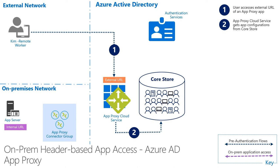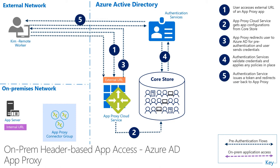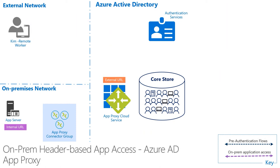Once it has the information it needs, the App Proxy cloud service redirects Kim to Azure AD for pre-authentication. In step three, auth services implement the OpenID Connect protocol for handling authentication. In step four, authentication services validate Kim's credentials, conditional access policies are evaluated, and the corresponding controls are applied. In step five, authentication services issue Kim a token scoped to App Proxy. This fulfills the pre-authentication process.